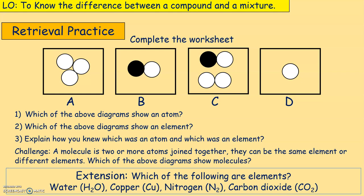When you're done — brilliant. Now I'd like you to look at this diagram with options A, B, C and D and answer three questions. Number one: which diagram shows an atom? Number two: which diagram shows an element? Number three: explain how you knew which was an atom and which was an element. There is also a challenge question. Pause the video, answer the questions, then click play.